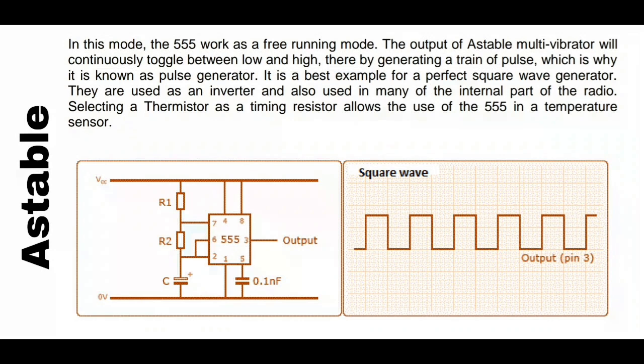They are used as an inverter and also used in many internal parts of radio, and as a thermistor or timing resistor. In this circuit diagram you can see there is an R1 and R2 resistor connected, which is used for duty cycle and frequency. You can change its frequency and duty cycle.